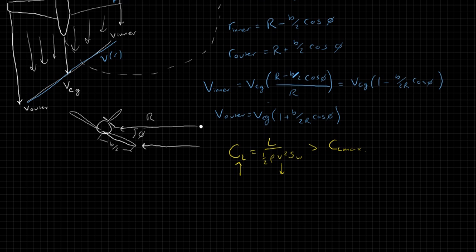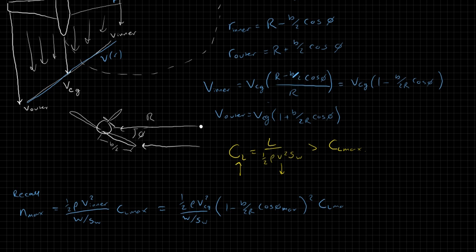So let's go back and say, so recall N_max for stall is going to be 1/2 ρV²_inner, right? To avoid stall, we're worried about that inner portion, W over SW CL_max. Okay, and we know what V_inner is, so let's plug in V_inner. We get 1/2 ρV² divided by W over SW, where this V is VCG, times (1 minus B over 2R cosine of phi_max)² times CL_max. Now we're using all these max terms, right, because we're trying to figure out what radius and such we have to have to avoid stall. So this is the very moment that stall occurs.